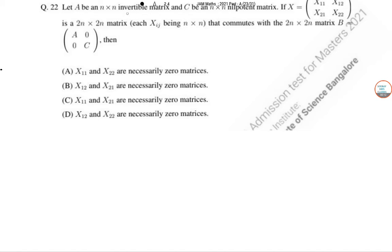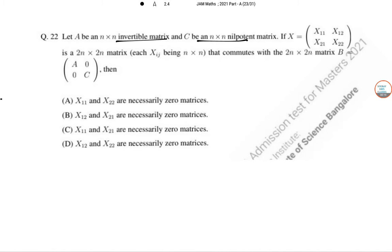Let A be a non-invertible matrix, A is an invertible matrix, C is an N cross N nilpotent matrix. If X equal to X11, X12, is a 2N cross 2N matrix and commutes with the 2N into 2N matrix B equal to A zero, zero C, then both are necessarily zero matrices or some other cases.